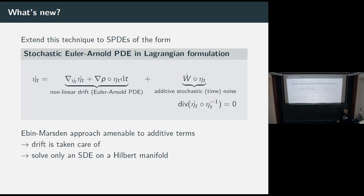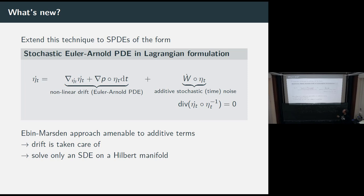When you look at the Ebin-Marsden machinery from the 1970 paper, you see that this approach is quite amenable to additive terms. If the stochastic term you are inserting into your equation is not interfacing in a complicated way with the PDE part, then you can basically throw everything into the Ebin-Marsden machinery and get an SDE on a Hilbert manifold. The PDE part is taken care of by the Ebin-Marsden machinery. The new term you have to treat is the additive stochastic term, which corresponds to a stochastic term on your Hilbert manifold.